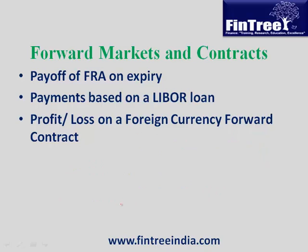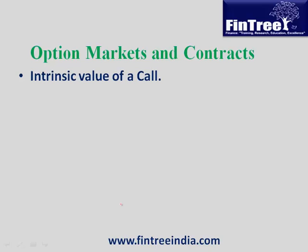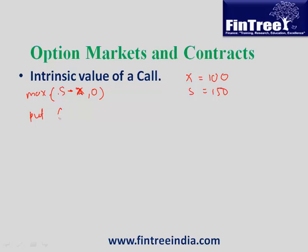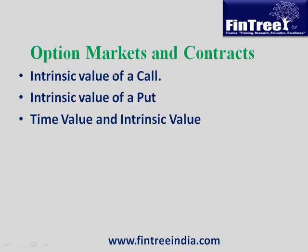Next topic: option markets and contracts. First: intrinsic value of a call option. If the strike price is 100 and the spot price is 150, then the intrinsic value is simply max(S − X, 0) = max(150 − 100, 0) = 50. For a put option, the intrinsic value is max(X − S, 0), because intrinsic value can never be negative — it is either 0 or a positive number.